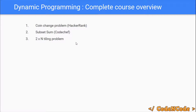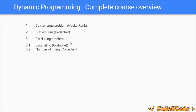Then there is a two-cross-N tiling problem. You are given a grid of size 2×N and you have dominoes of size 1×2 or 2×1, and you have to tell in how many ways you can fill the grid of 2×N. We would be taking two problems — first one is Easy Tiling and another one is Number of Tilings, both from CodeChef. The first one is easy while the other is a little bit difficult.